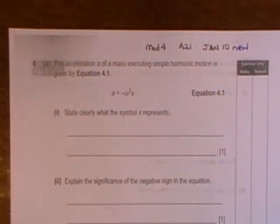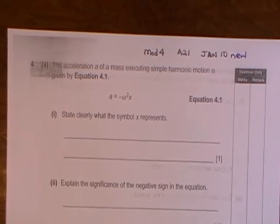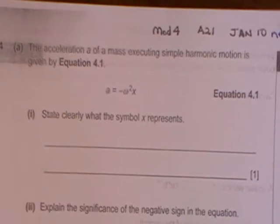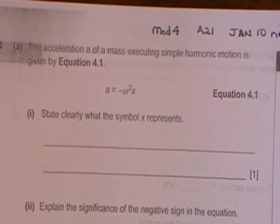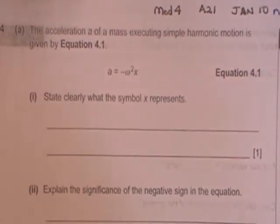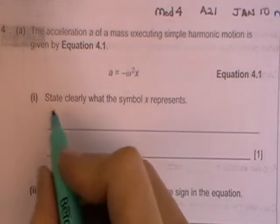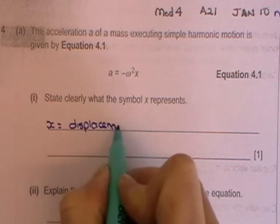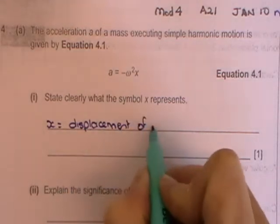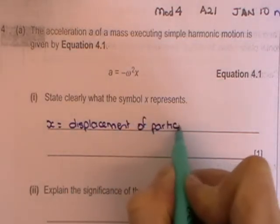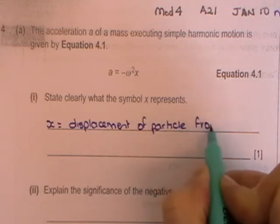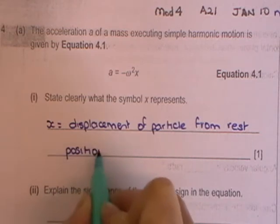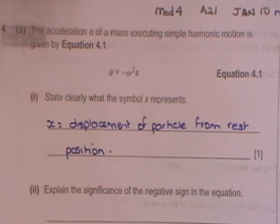The acceleration A of a mass executing simple harmonic motion is given by equation 4.1. A is equal to minus omega squared X. State clearly what the symbol X symbolizes or represents. So X is a displacement of the particle from its rest position, and that can of course either have a positive or a negative value.